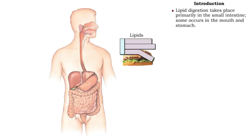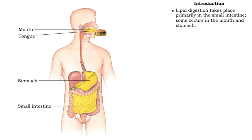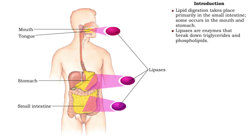Lipid digestion occurs primarily in the small intestine, though a small amount of lipids are broken down in the stomach. Special enzymes called lipases break down triglycerides, the most abundant lipids in the diet, and phospholipids.